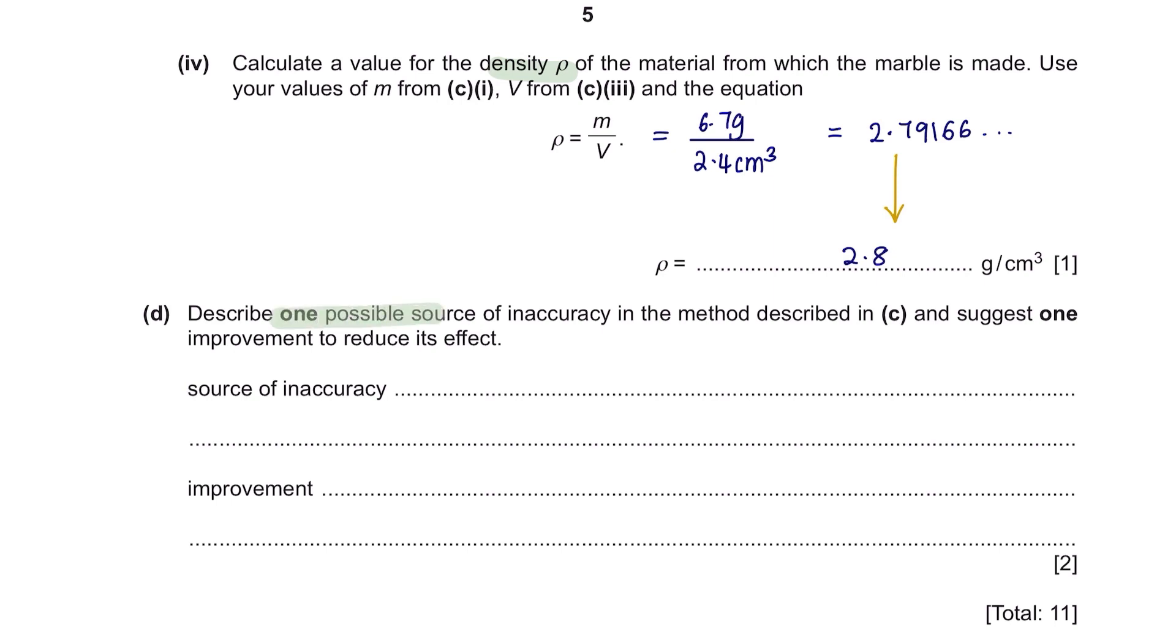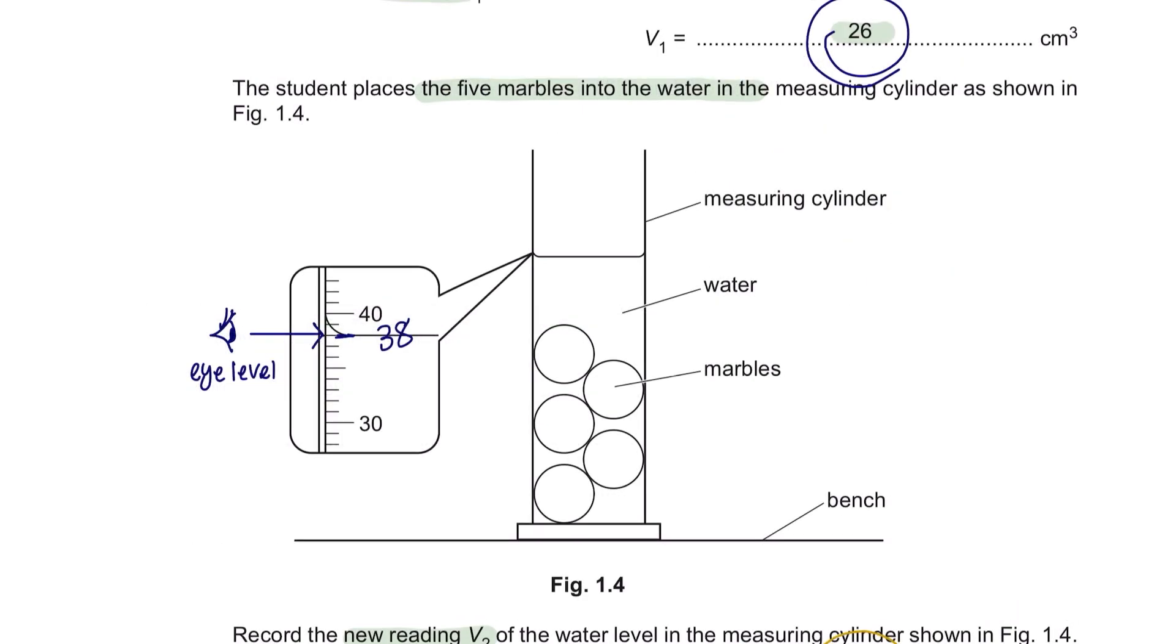Next question D. Describe one possible source of inaccuracy in the method described in part C and suggest one improvement to reduce its effect. In method C, by calculating the density, we are using a measuring cylinder to obtain the volume. An inaccuracy that could happen when using a measuring cylinder is that, if it's too wide, the readings could be slightly off. To obtain a more accurate reading, we can use a narrower measuring cylinder.